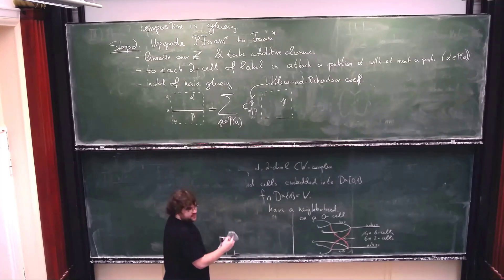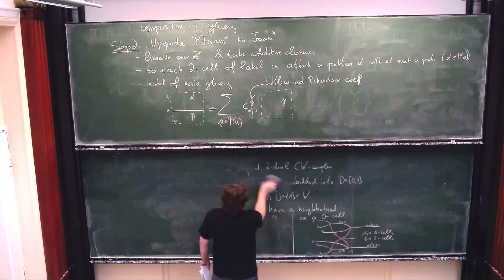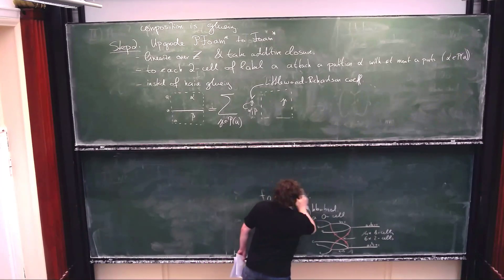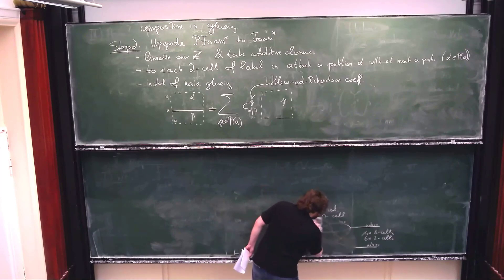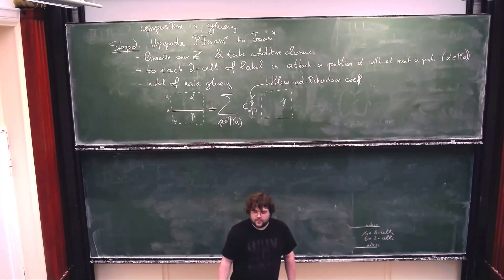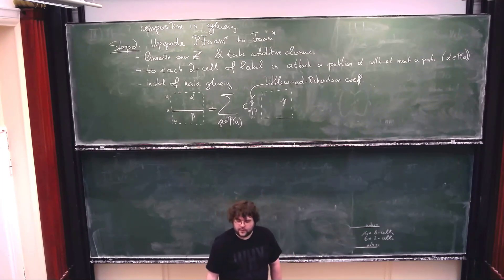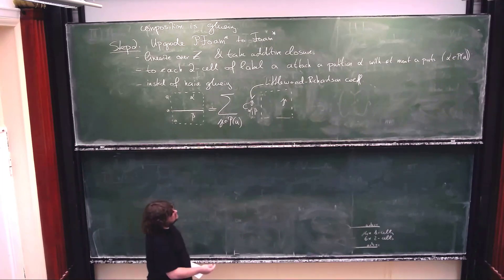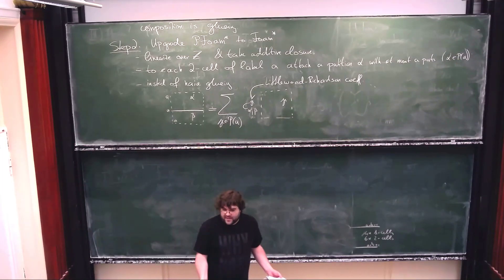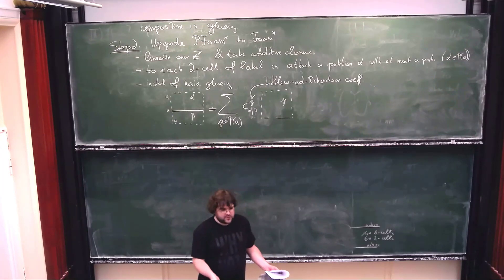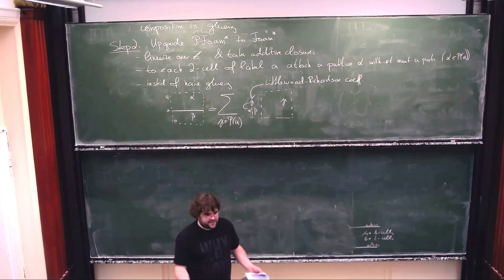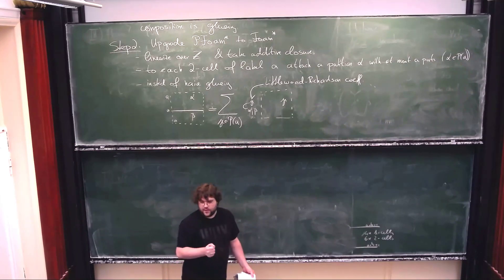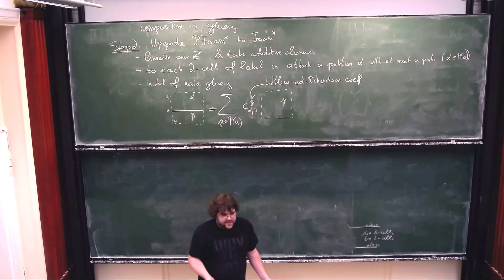Step three: we add in N and make things GL_N equivariant. The first thing we do is extend scalars from Z to symmetric functions in N variables — the GL_N equivariant cohomology of a point. Now comes the magic ingredient, about which there are two talks this week: the singular TQFT functor F from the extended foam category — let's call it star-N — to sym_N-modules, which is due to Robert and Wagner. Since they will talk about this, I won't go into details.